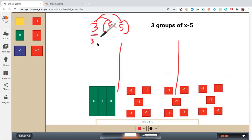So that's 3 times x plus 3 times negative 5. So I have 3x plus negative 15. Or we also know that we can write this algebraically. This is the same as adding a negative quantity, which is the same as subtracting, 3x minus 15.